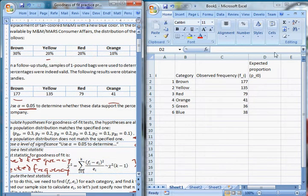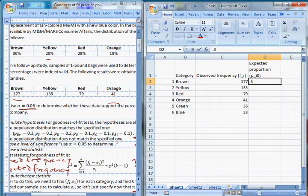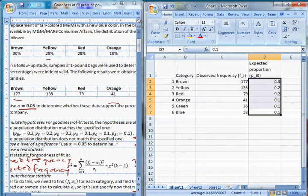Our expected proportion comes from our null. And it comes from the proportions that they give us. So they're saying that 0.3 of these are brown, 30%, 20% are yellow, 20% are red, 10% are orange, 10% are green, and 10% are blue. And if you want to, you can check to make sure that these add up to 100. And you can see down here, it shows you the sum is 1. That's good.